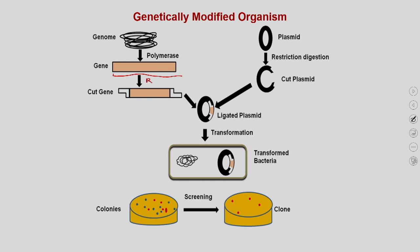Once you cut the gene with specific restriction enzymes, it develops sticky ends on both sides to be used for downstream applications. Similarly, you take the plasmid and perform restriction digestion with the same set of restriction enzymes, so the plasmid also develops sticky ends. Then you take the cut plasmid together with the gene and put them into a ligation reaction. The result of ligation is the chimeric plasmid.